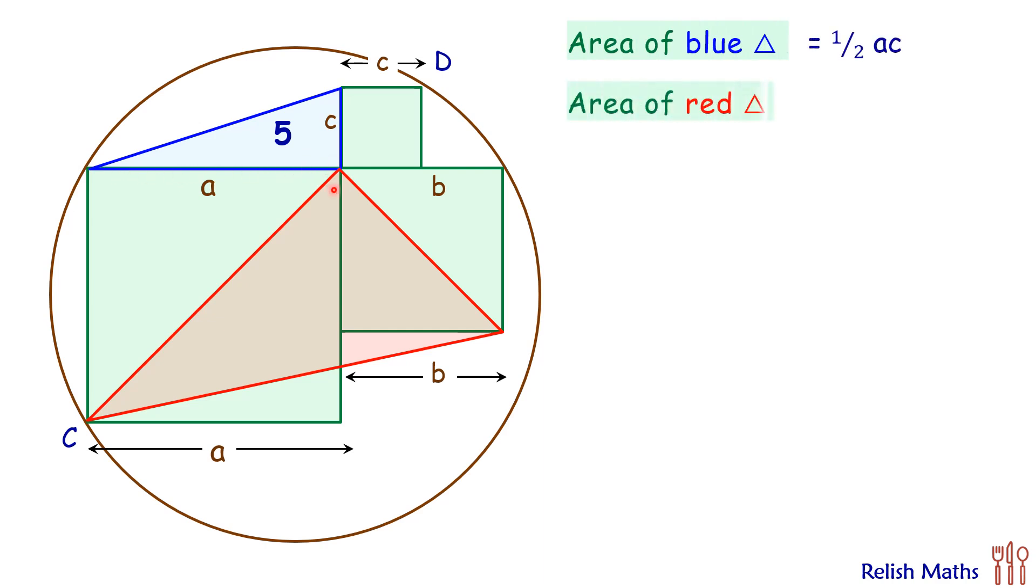For area of red triangle this angle here is 45 degrees, the angle between diagonal and side, and thus this angle is also 45. So this complete angle is a right angle. So area of red triangle will be half of base into height.